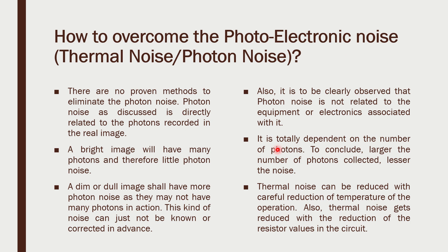How do we overcome photo-electronic noise? There are no proven methods to completely eliminate photon noise, since it is 100% dependent on the number of photons and the lighting environment. A bright image will have more photons and therefore limited noise, while a dim image will have fewer photons and more noise — and we can only know this after taking the picture. In summary: the larger the number of photons collected, the lesser the noise. Thermal noise can be reduced by carefully managing temperature — if the camera heats up, wait for it to cool down. Thermal noise can also be reduced by appropriately reducing resistor values in the circuit.